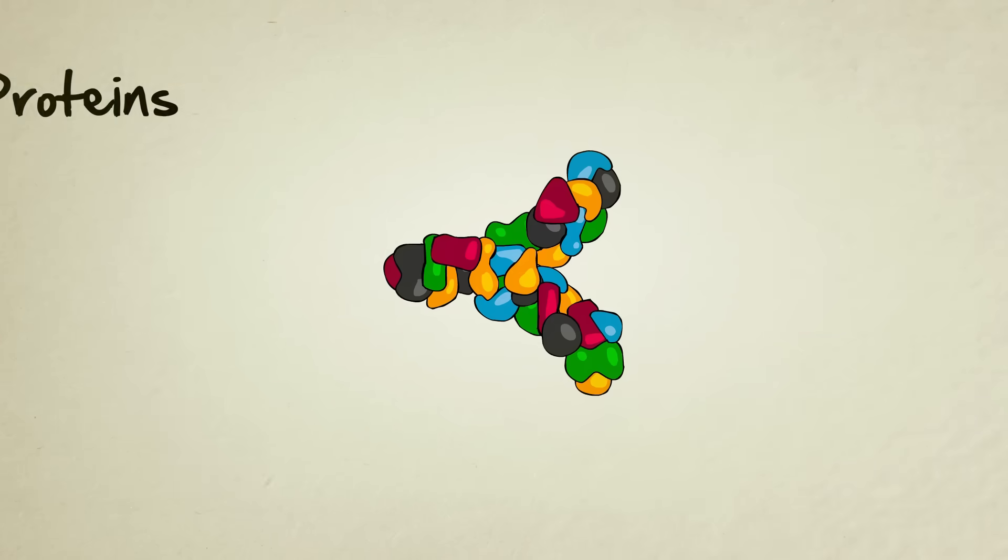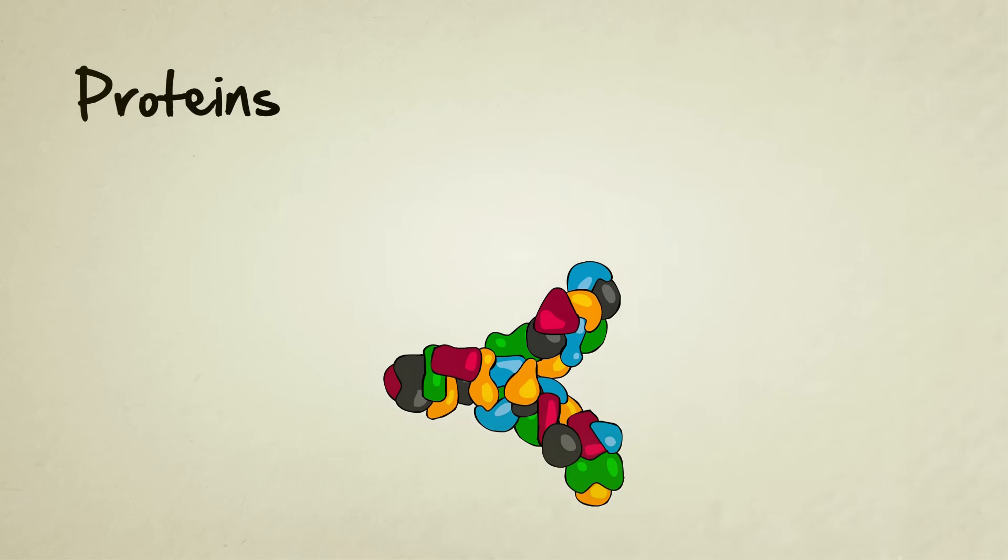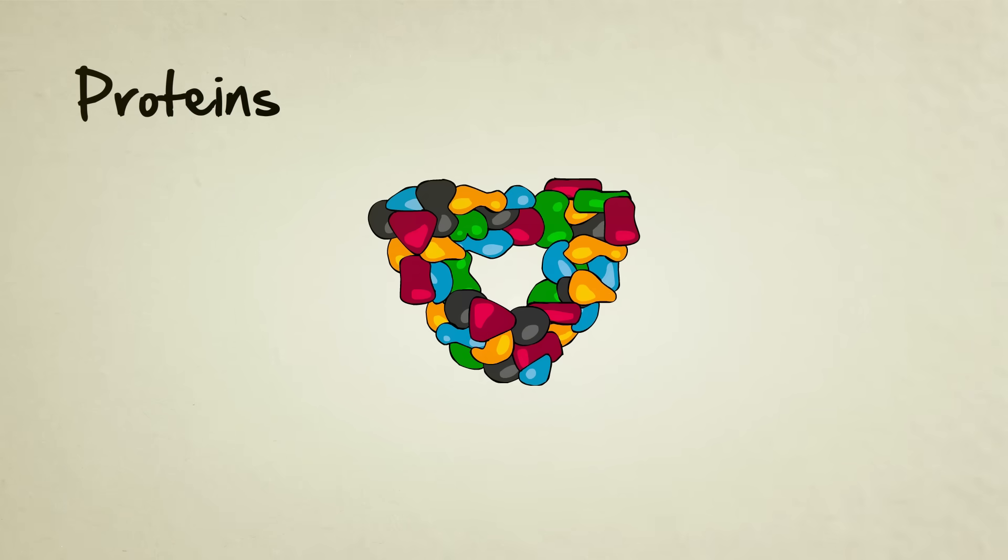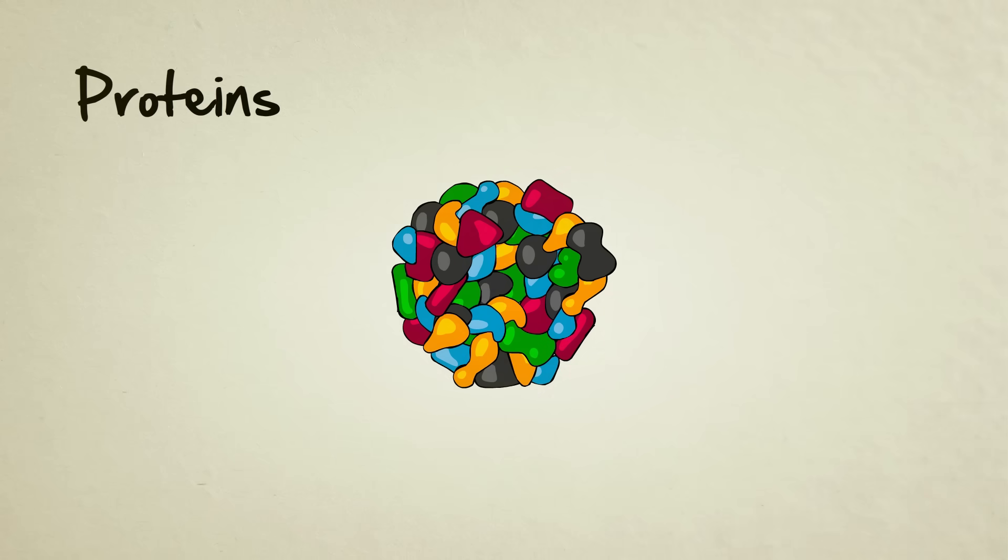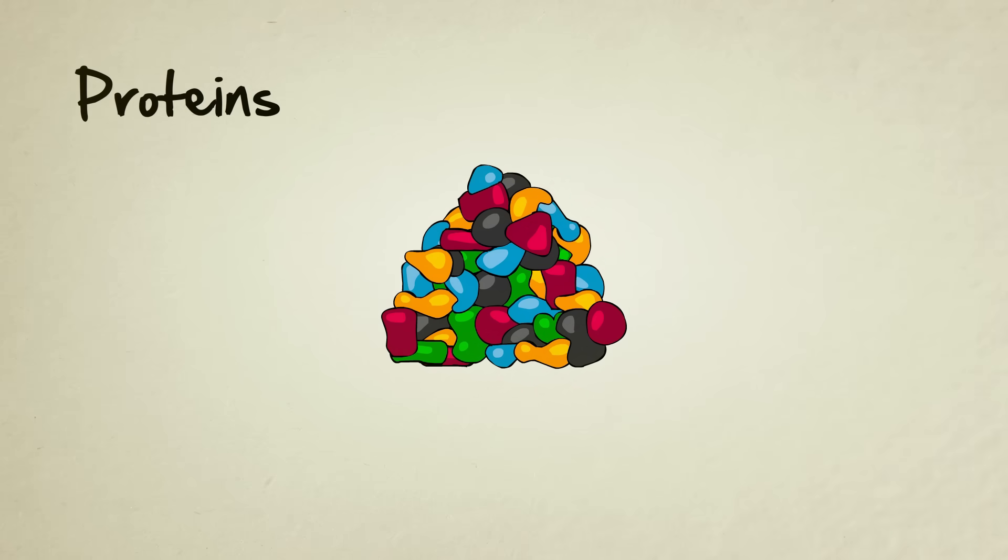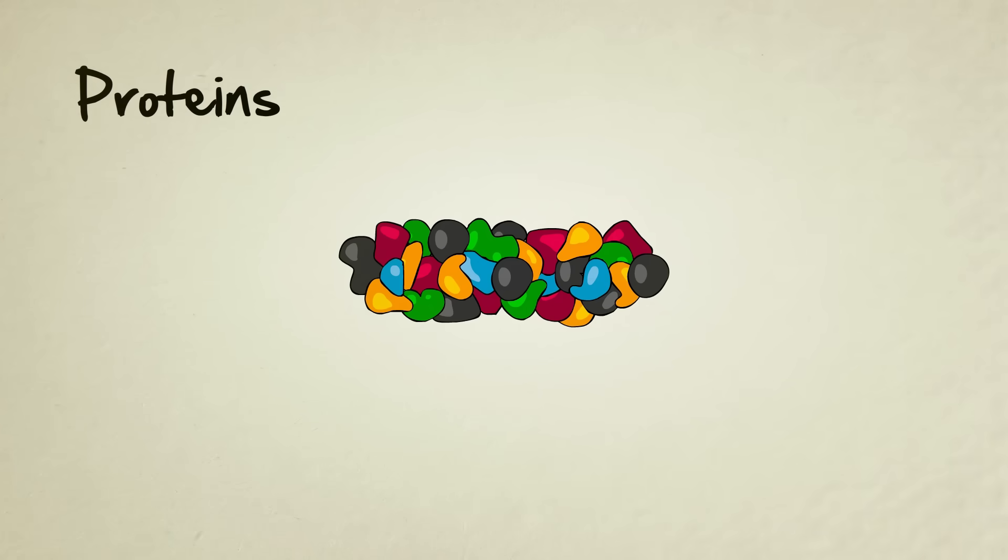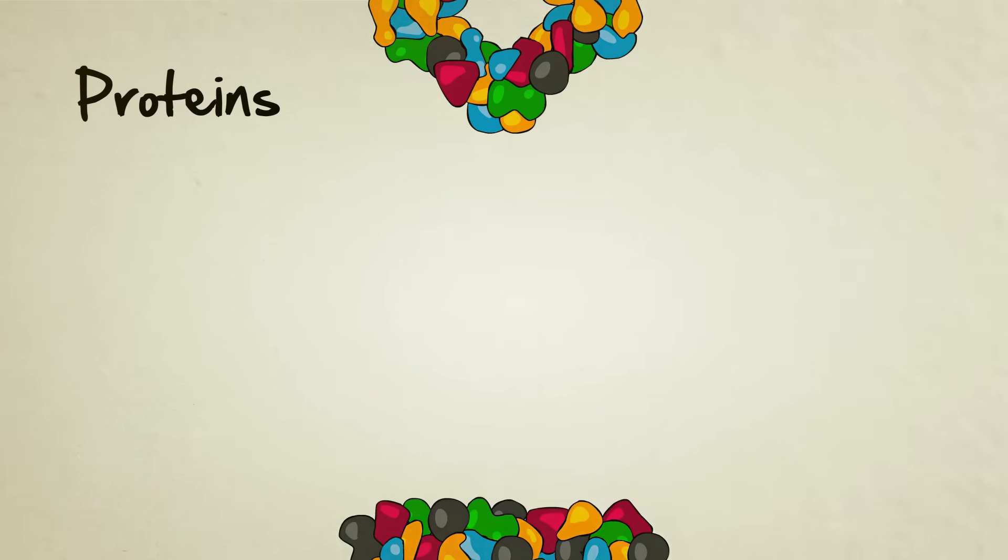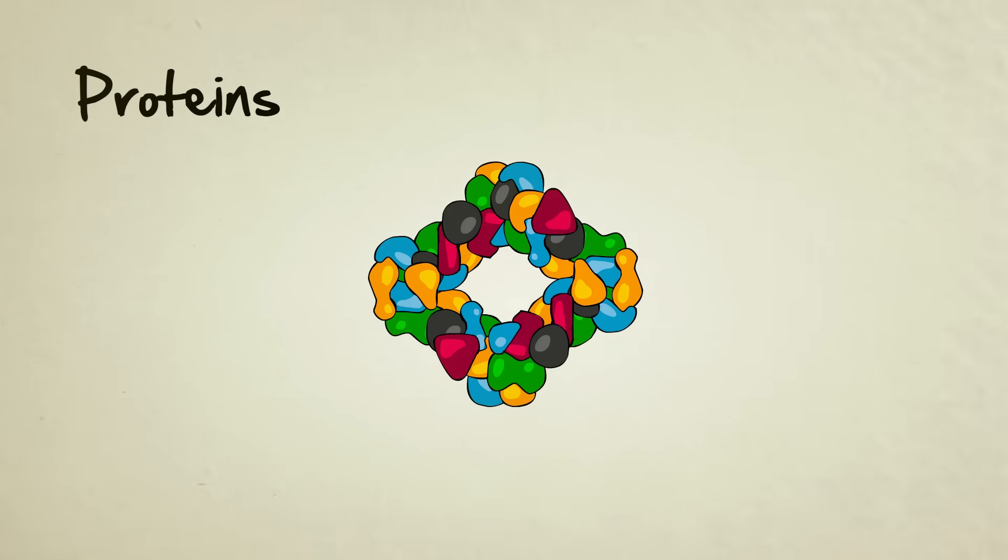These proteins that make up our bodies, and keep in mind there's millions of different kinds of proteins, they each have to be formed in the perfect shape in order to function. If they're the wrong shape, they usually won't work. That's where DNA comes in.